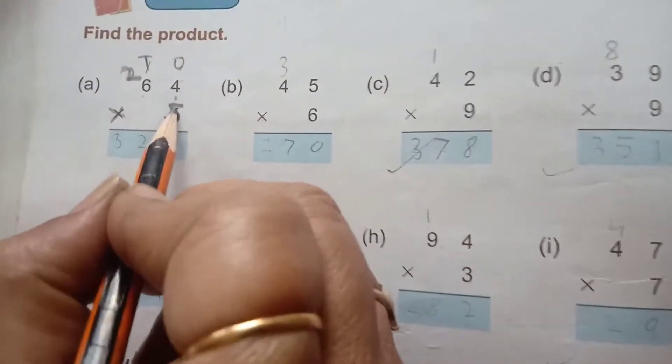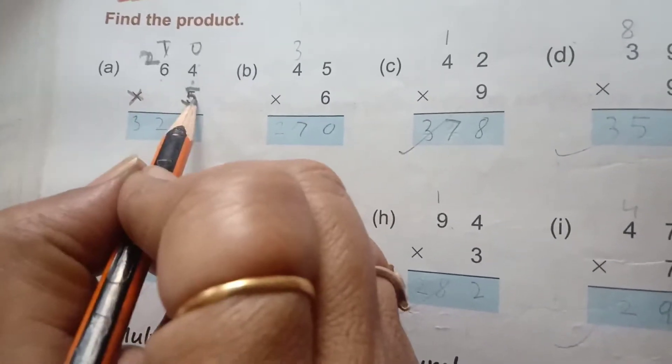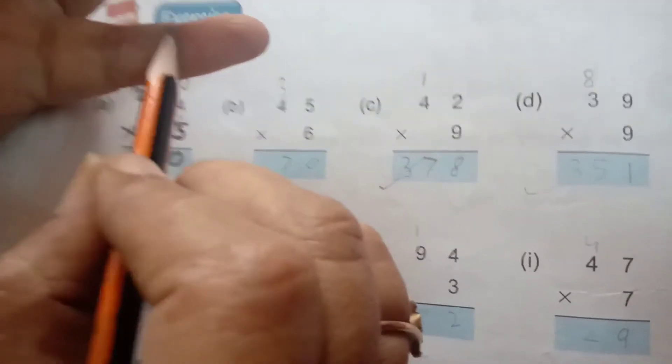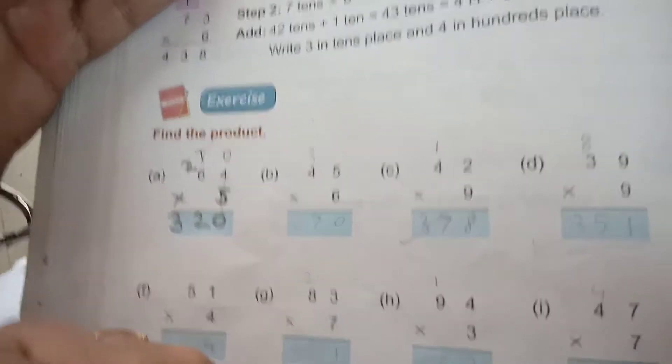Then we have to multiply 6 by 5. 5 sixes are 30. After 32, 31, 32. So the answer is 320.